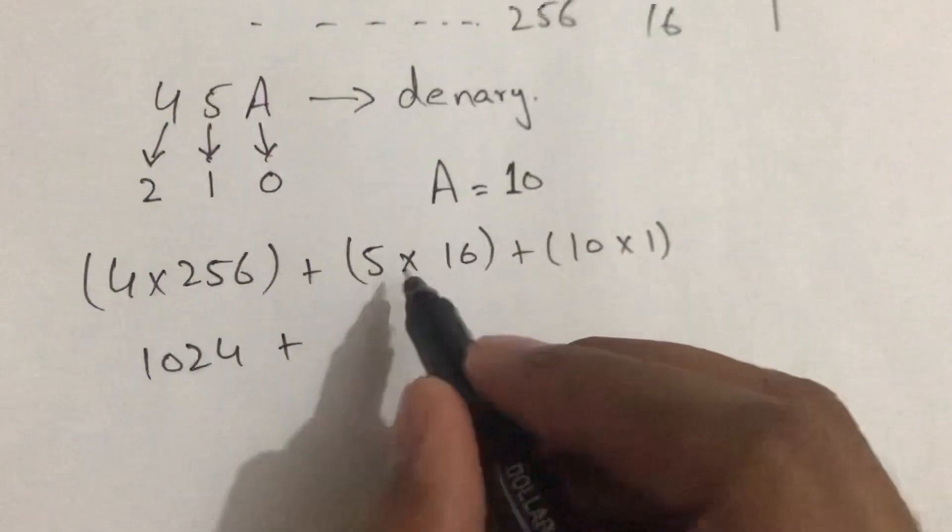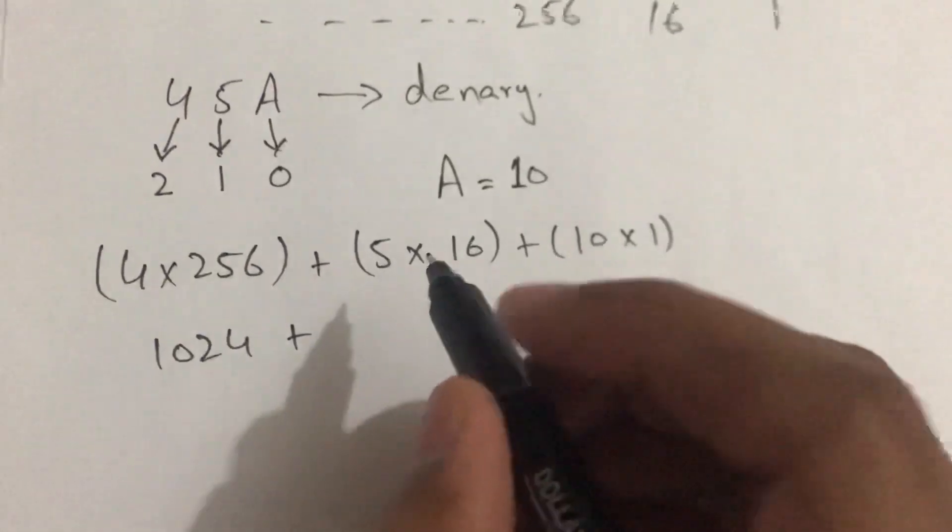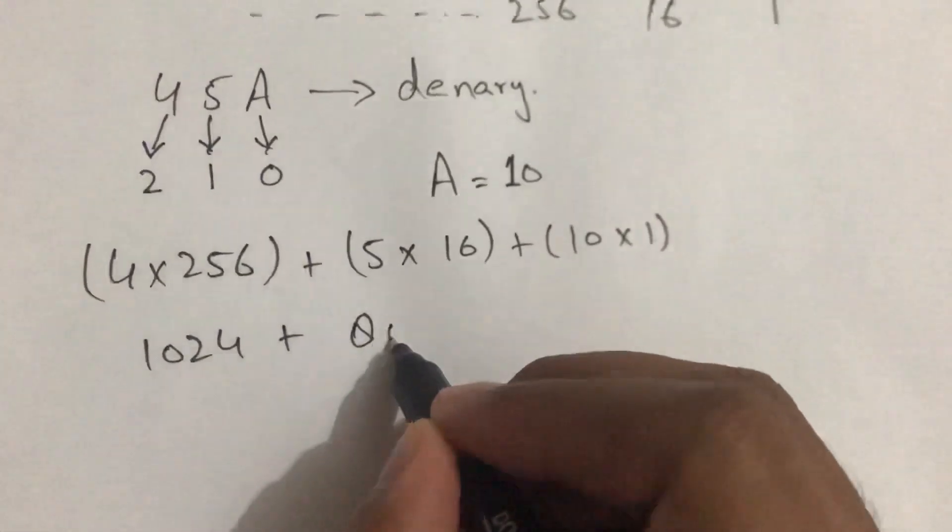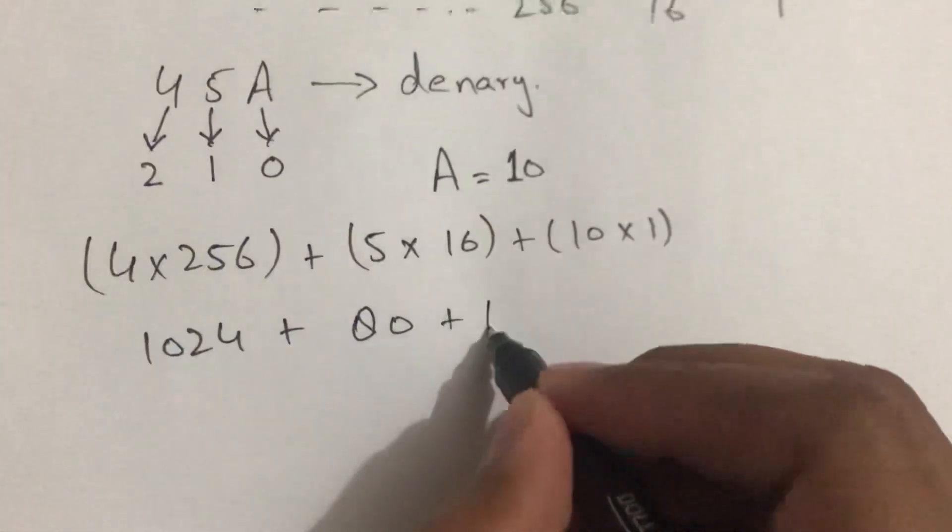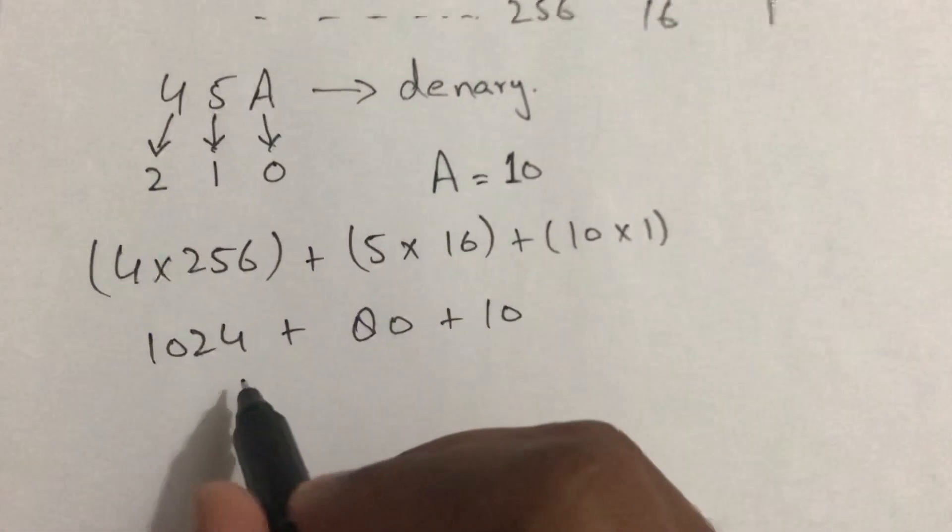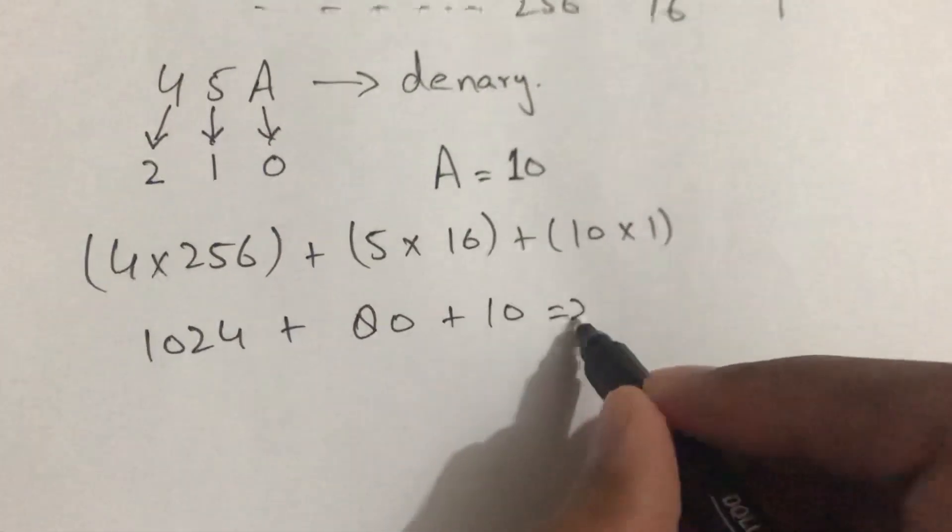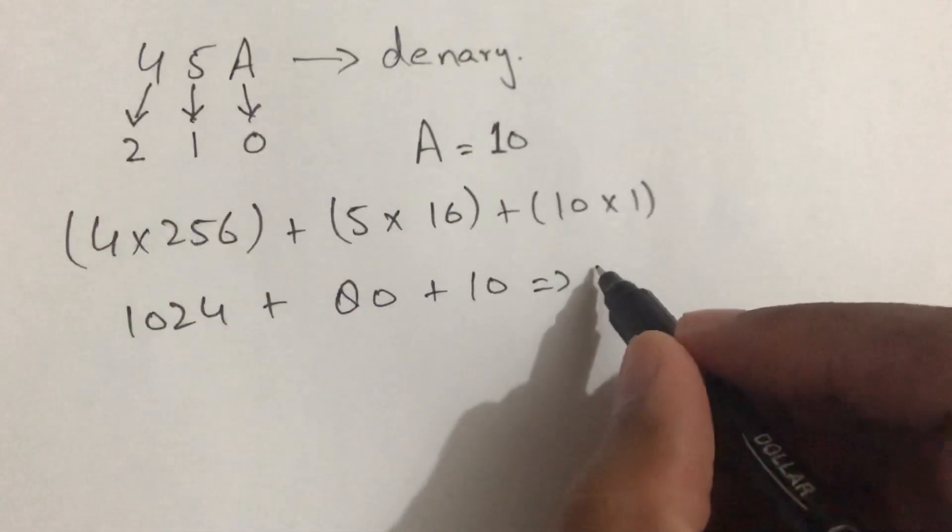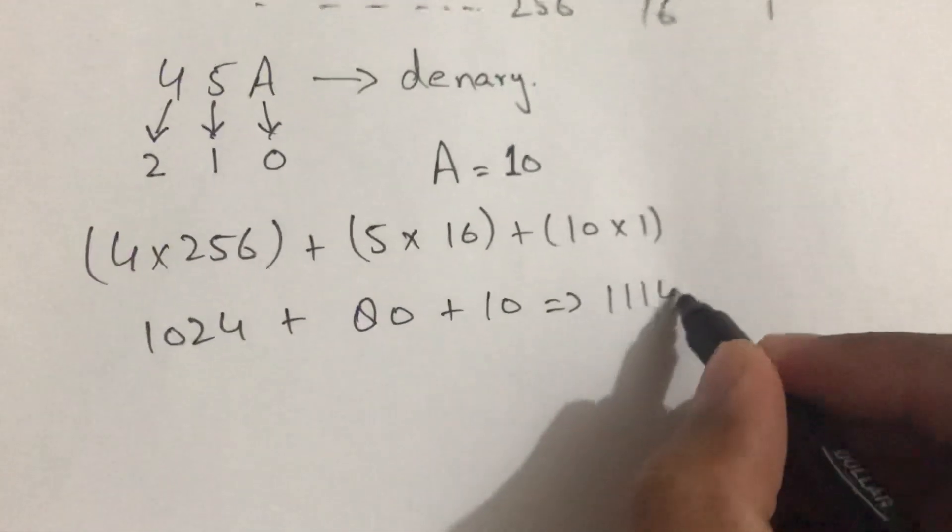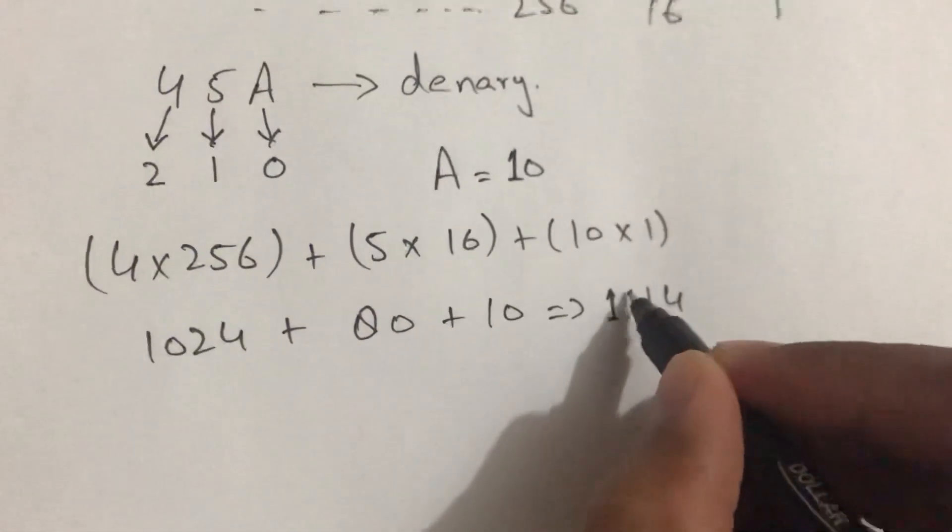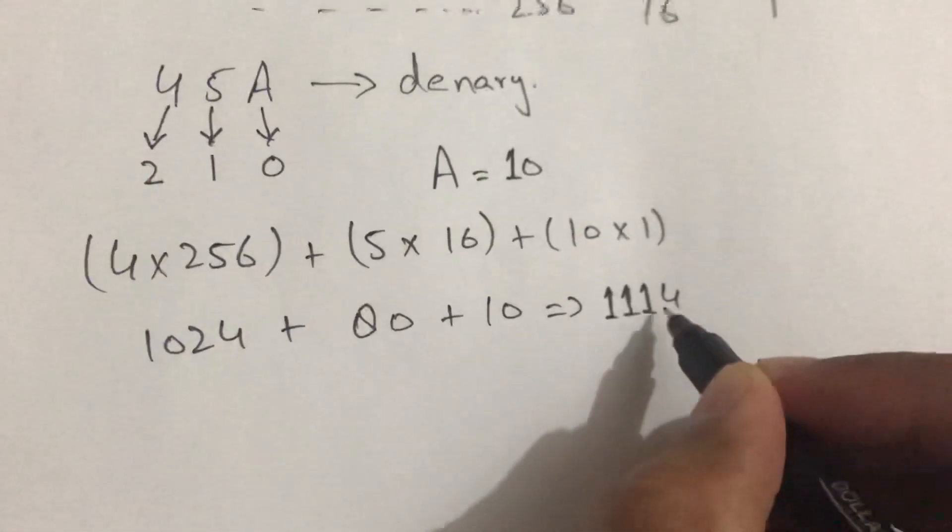5 into 16 will be 80, and 10 multiplied by 1 will be 10. So when we add all of these values, it will sum up to 1114. So this is our denary value.